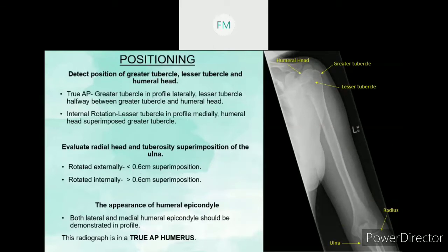For positioning, to detect the rotation or verify the patient position is correct: first, we have to evaluate the position of the greater tuberosity, lesser tuberosity, and humeral head. If the patient is in a true AP, then the greater tuberosity will be in profile laterally, and the lesser tuberosity will be seen halfway between the greater tuberosity and humeral head. So lesser tuberosity must be in between the greater tuberosity and humeral head if the patient is in a true AP.